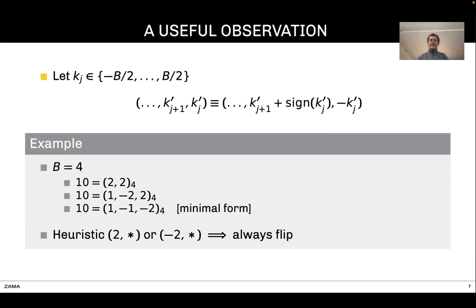What does that example tell us? When we have a two followed by another two or two followed by a minus two, what we'd like to do is just to flip the digit. That's a pretty good intuition. The way to get BNAF is almost doing that: flipping the digits when it is B/2 or larger value, depending on the next digits.